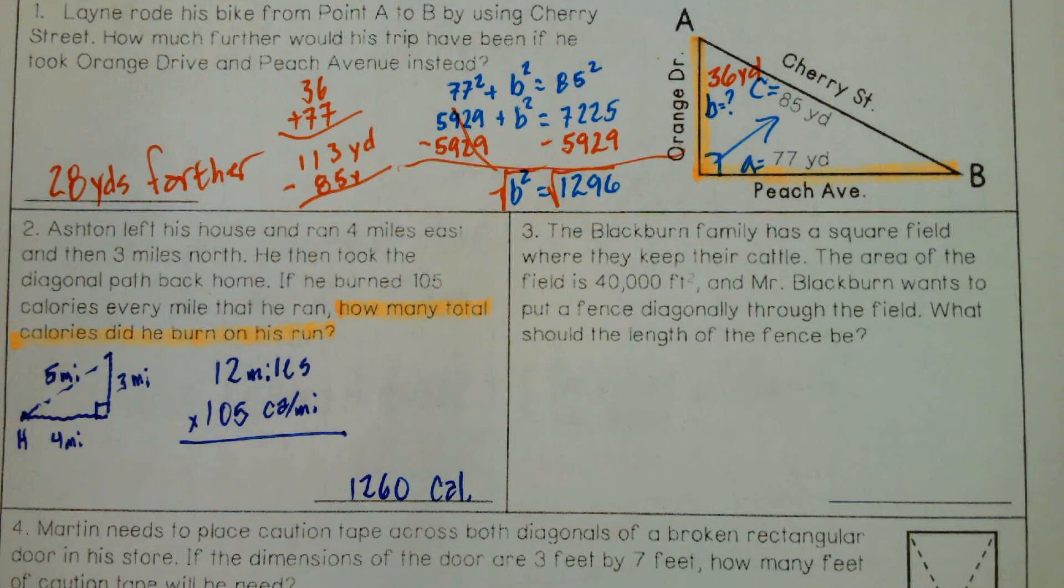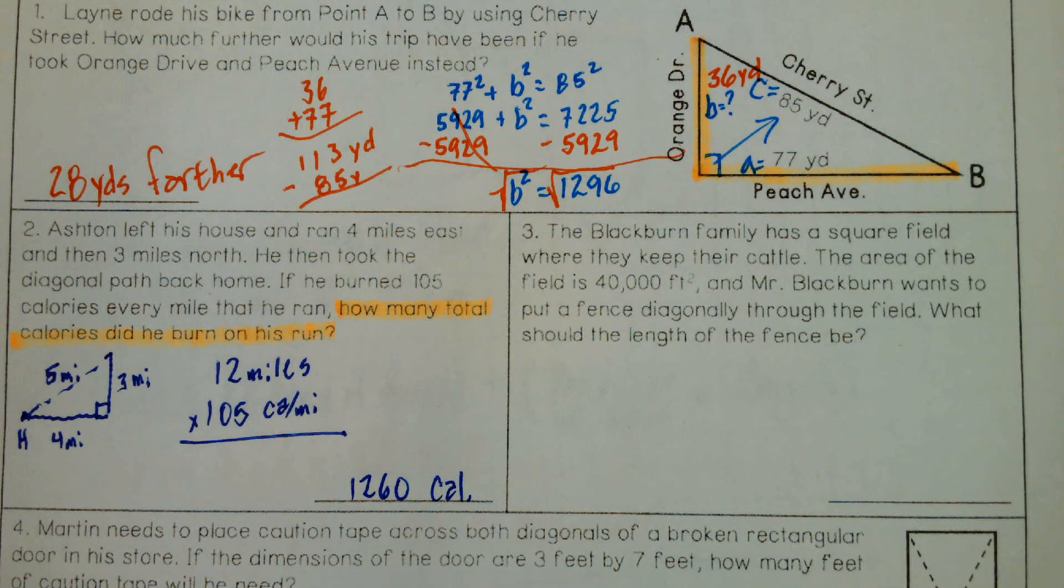All right. We're doing pretty good. Let's move on to number three. The Blackburn family has a square field where they keep their cattle. The area of the field is 40,000 square feet, and Mr. Blackburn wants to put a fence diagonal through the field. What should the length of the fence be?